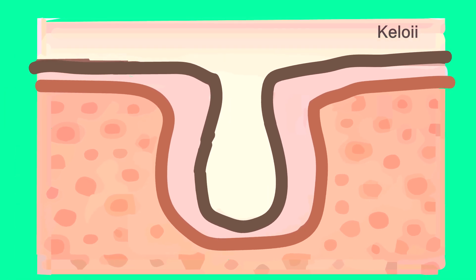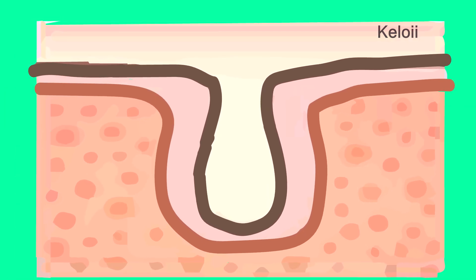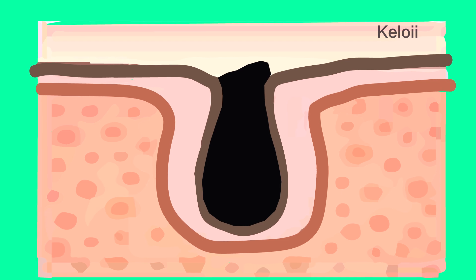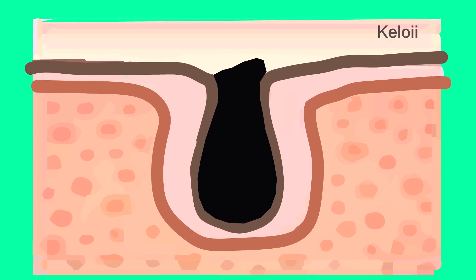Blackheads are small bumps that appear on your skin due to clogged hair follicles. These bumps are called blackheads because the surface looks dark or black. Blackheads are a mild type of acne that usually form on the face.